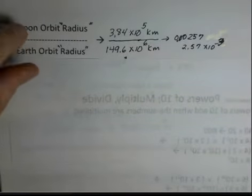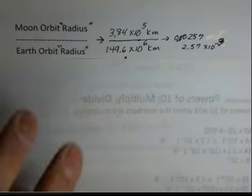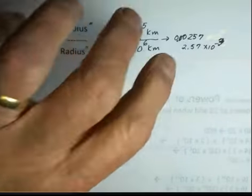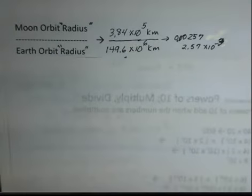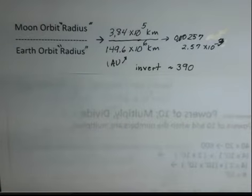What would happen if we do the calculation of earth orbit radius divided by moon orbit radius? Well, we don't have to do the whole thing again. If this is on your calculator, just invoke the 1 over x calculation. And what we find is that roughly, approximately, the size of the earth's orbit is 390 times the size of the moon's orbit.